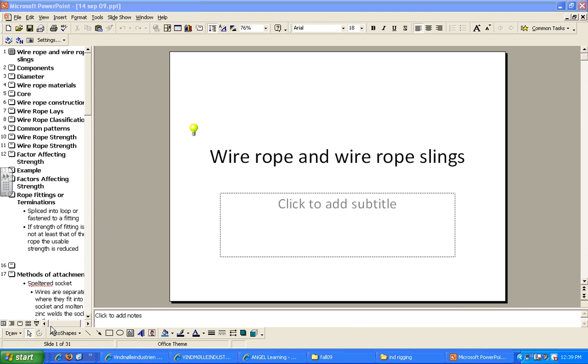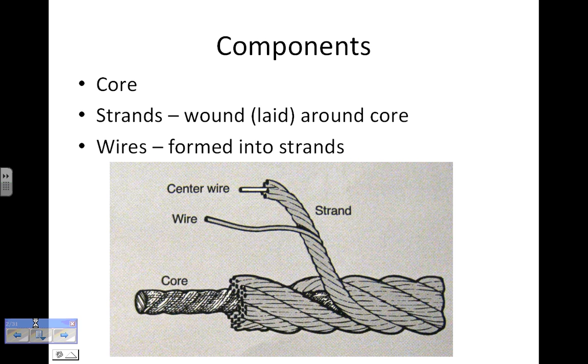Welcome to a lecture about chapter two in our rigging textbook: wire rope and wire rope slings. You might not think something as simple as a piece of wire rope would be as complex as it is, but there's quite a bit to it.